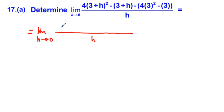We're going to expand this quantity (3+h)². So 3² is 9, and we have 3h times 2 which is plus 6h, and lastly h². So it's 4 times this expansion. We're going to break out the parentheses: minus 3 and minus h, and then minus the quantity 4 times 3² which is 36, and then minus 3.